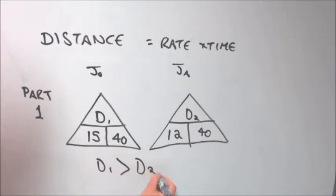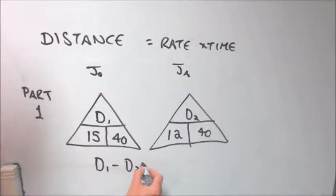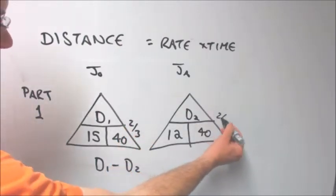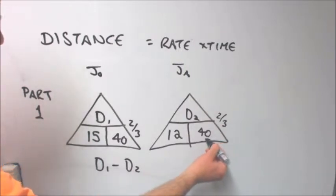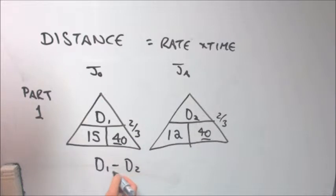So D1 is clearly going to be greater than D2. No need to go into details here. The rate's faster and they travel for the same period. So let's try and find out how much further John will travel in this part of the story compared to Jacob. It's important, first of all, to unify our units. We're talking about miles per hour, so we have to change minutes into hours. Two thirds of an hour is equivalent to 40 minutes.